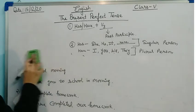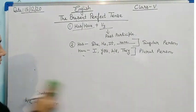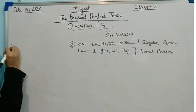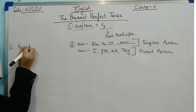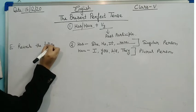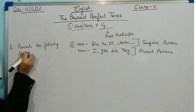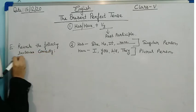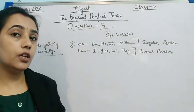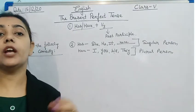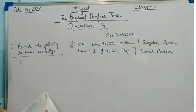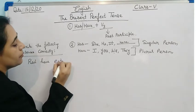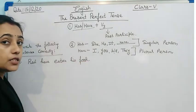Exercise E: Rewrite the following sentences correctly. That means a sentence will be given that is wrong — first we have to see what mistake is there, and then correct it. First sentence: Ravi have eaten his food. Let's see — Ravi is how many persons? Ravi is a single person.